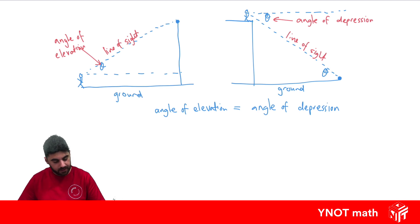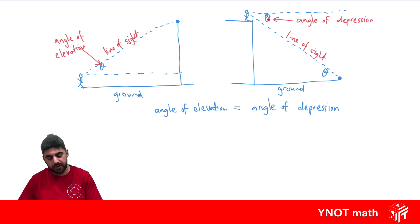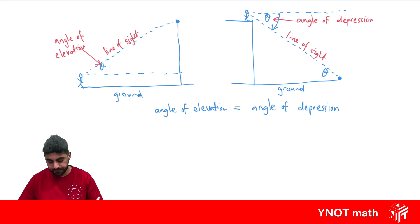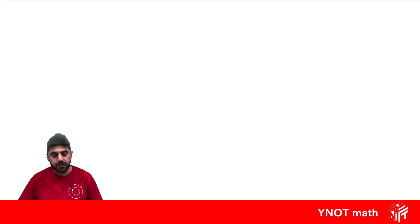A very common mistake is that this angle gets confused with the angle of depression. Remember, the angle of depression always has to act from the horizontal downwards. So you've got to start horizontal and go downwards for the angle of depression. And we can just use our normal trig functions to solve problems with angles of elevation and depression.